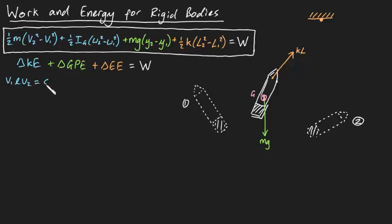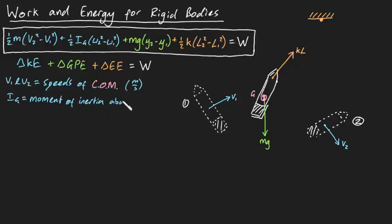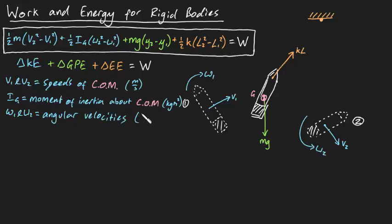v1 and v2 are the speeds of the center of mass at positions one and two in meters per second. Ig is the moment of inertia of the pen about its center of mass in kilograms meters squared. Omega 1 and omega 2 are the angular velocities of the pen at positions one and two in radians per second.